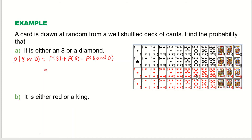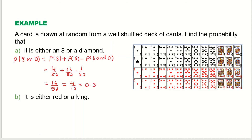Probability of 8 is 4 over 52, plus probability of diamond which is 13 over 52, minus probability of 8 and diamond which is 1 over 52. Simplifying gives 16 over 52, which reduces to 4 over 13, or 0.3077 as a decimal. You can give the answer as a decimal or as a reduced fraction.